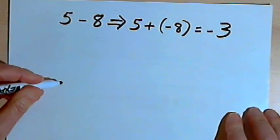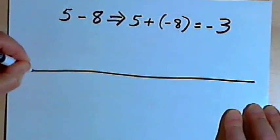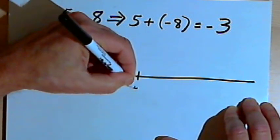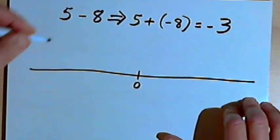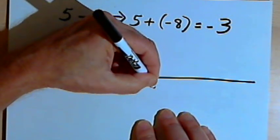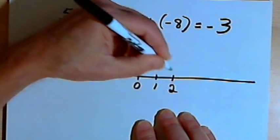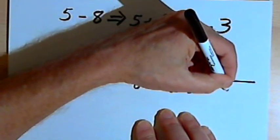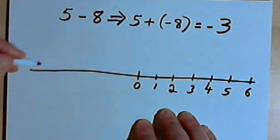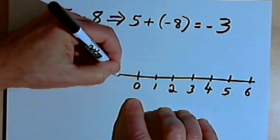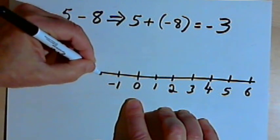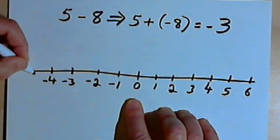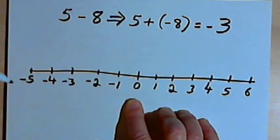Now we can look at this on a number line as well. This is going to be similar to the way that, in a different video, we looked at addition on a number line. Starting near the middle with 0, I'll add the positive numbers — that means moving to the right: 1, 2, 3, 4, 5, 6. And I'll add negative numbers, which means going from 0 to the left: negative 1, negative 2, negative 3, negative 4, negative 5.